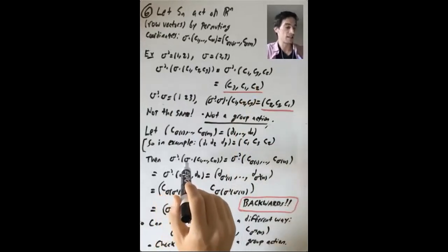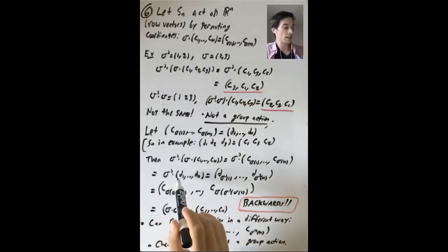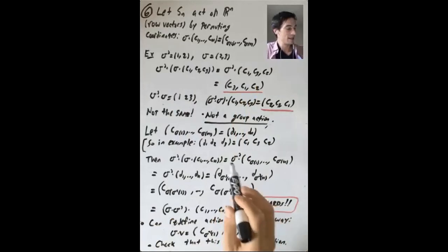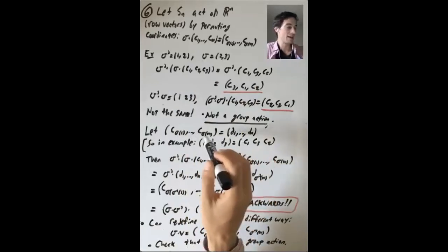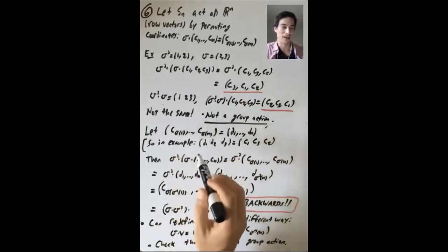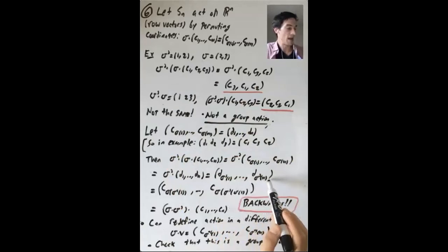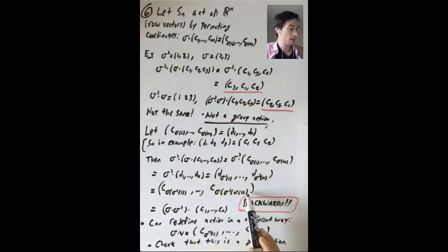Okay, so now what is sigma prime acting on sigma acting on this vector? It's sigma prime acting on (c sigma 1 up to c sigma n). It's sigma prime acting on (d1 up through dn). And that's just like a new vector. So that's (d sigma prime 1 up to d sigma prime of n). And now the important thing is to note, how are the indices in the d vector related to the indices in the c vector? Well, you get the indices in the d vector by applying sigma to the corresponding indices in the c vector. So then what is (d sigma prime of 1 up through d sigma prime of n)? It is c of sigma of sigma prime of 1, c sigma sigma prime of 2, up to c sigma sigma prime of n.